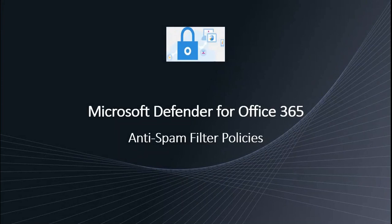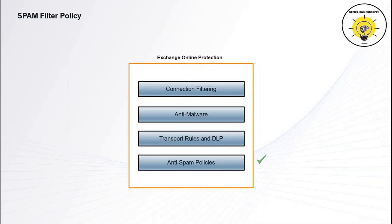Now let's understand what anti-spam filter policies are and how they work. I will be showing you how we can manage inbound and outbound anti-spam filter policies. Spam filter policies help protect organizations from receiving spam emails. In Exchange Online Protection, spam filtering policies are processed once an email has passed through connection filtering, anti-malware, and transport rules check. If the email is an inbound email, it will be processed by inbound anti-spam filter policies, and if outbound, outbound spam filter policies will scan that particular email.